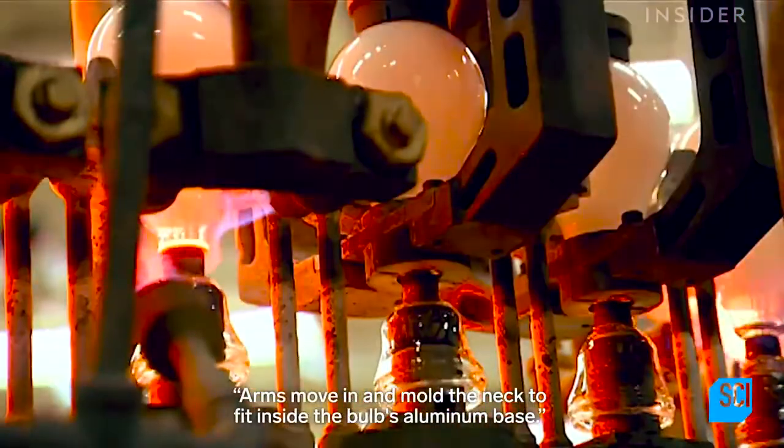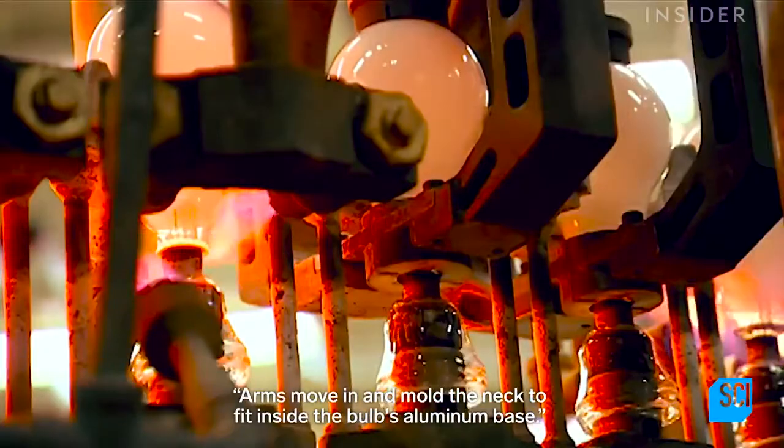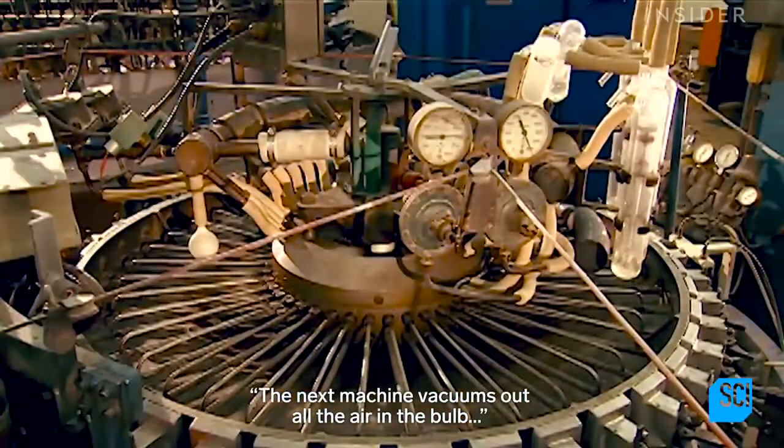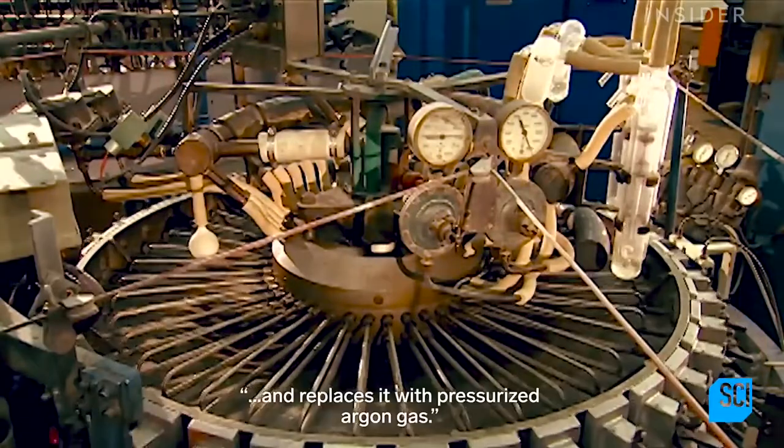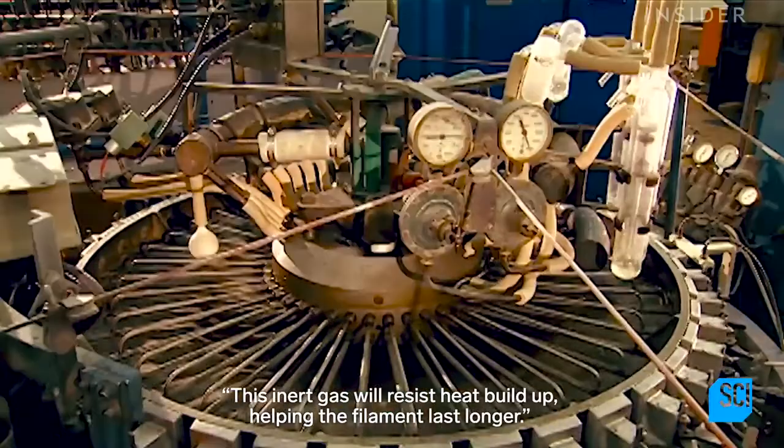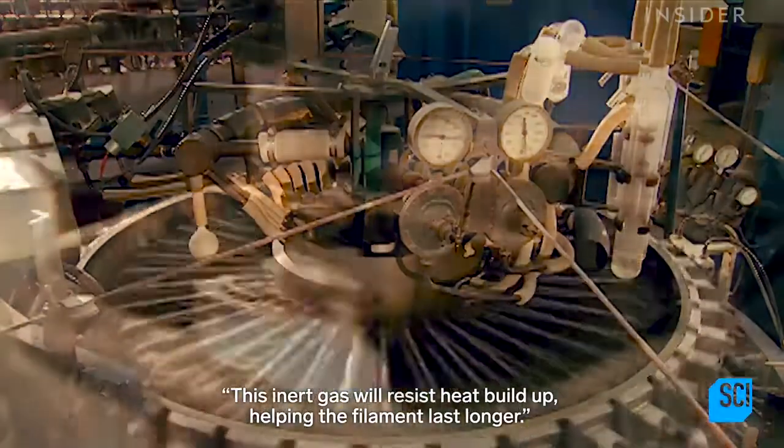Arms move in and mold the neck to fit inside the bulb's aluminum base. The next machine vacuums out all the air in the bulb and replaces it with pressurized argon gas. This inert gas will resist heat buildup, helping the filament last longer.